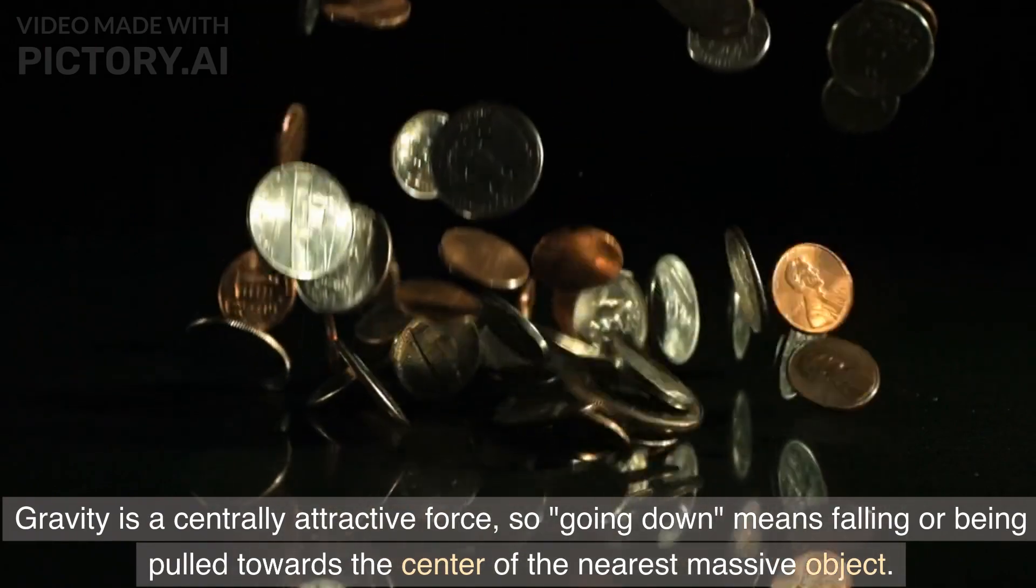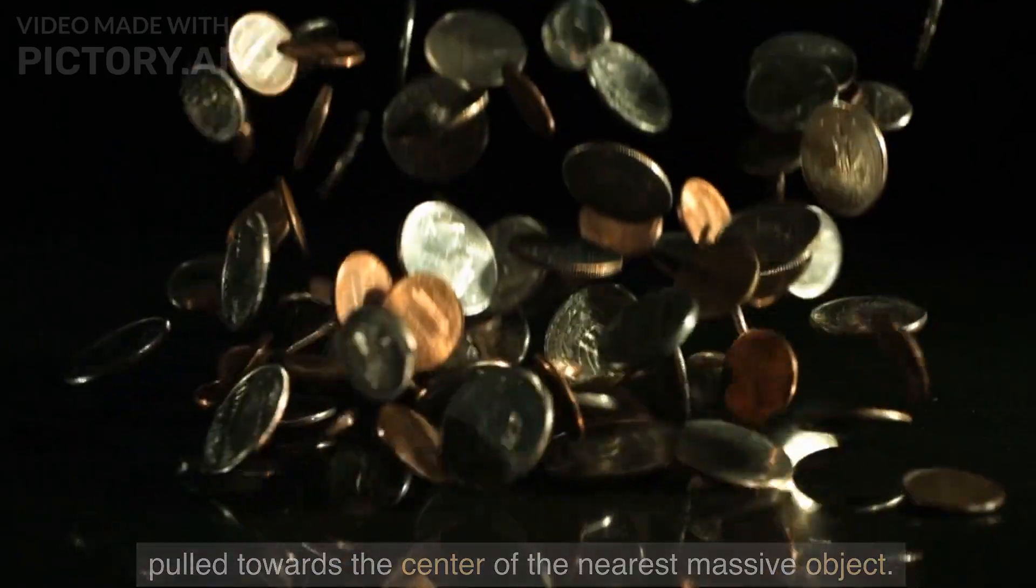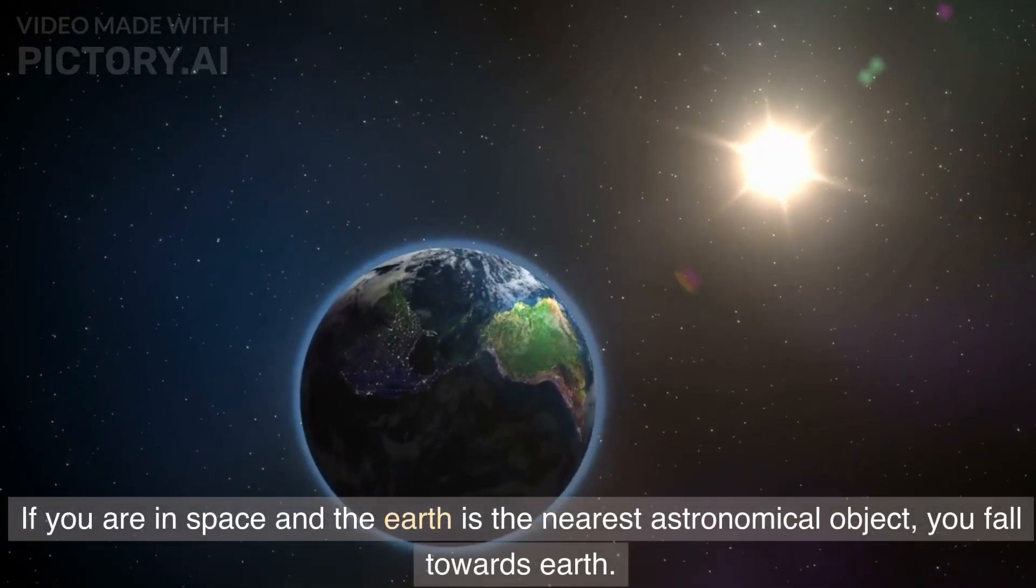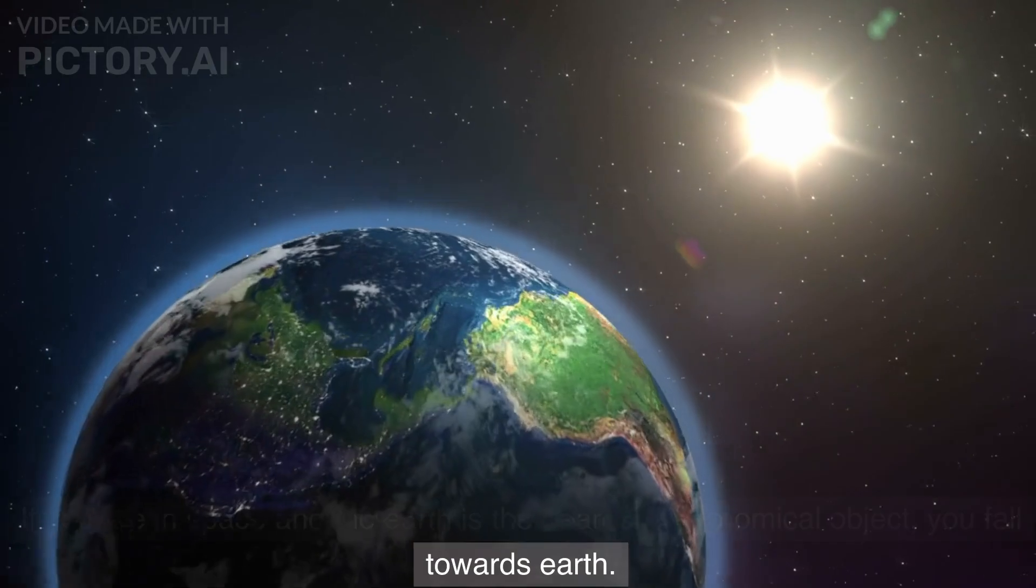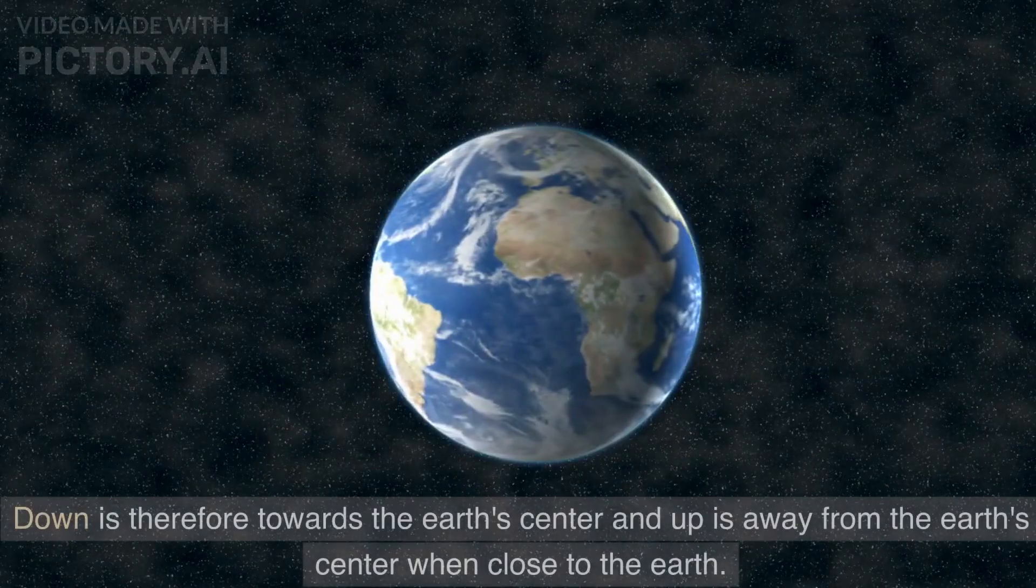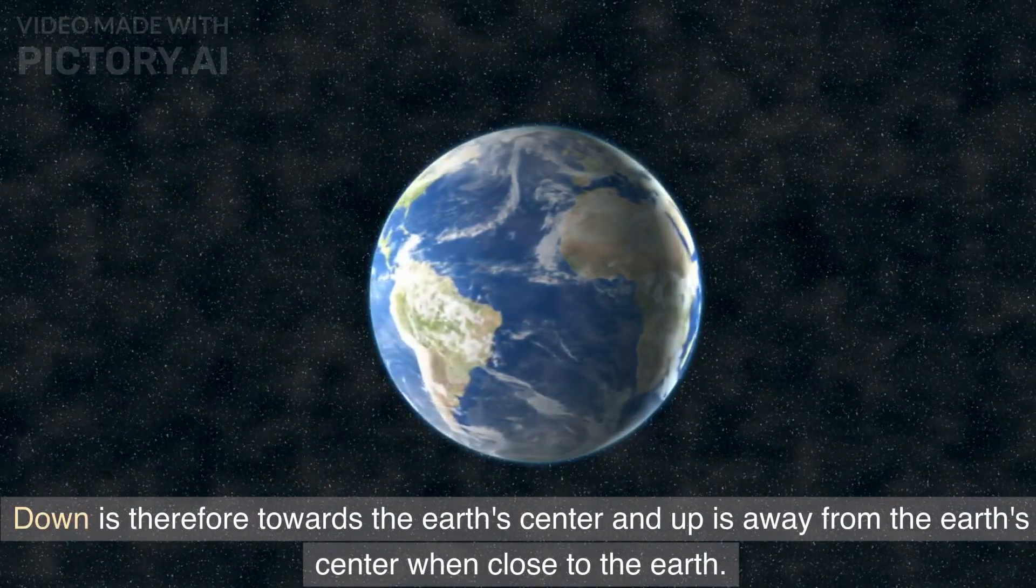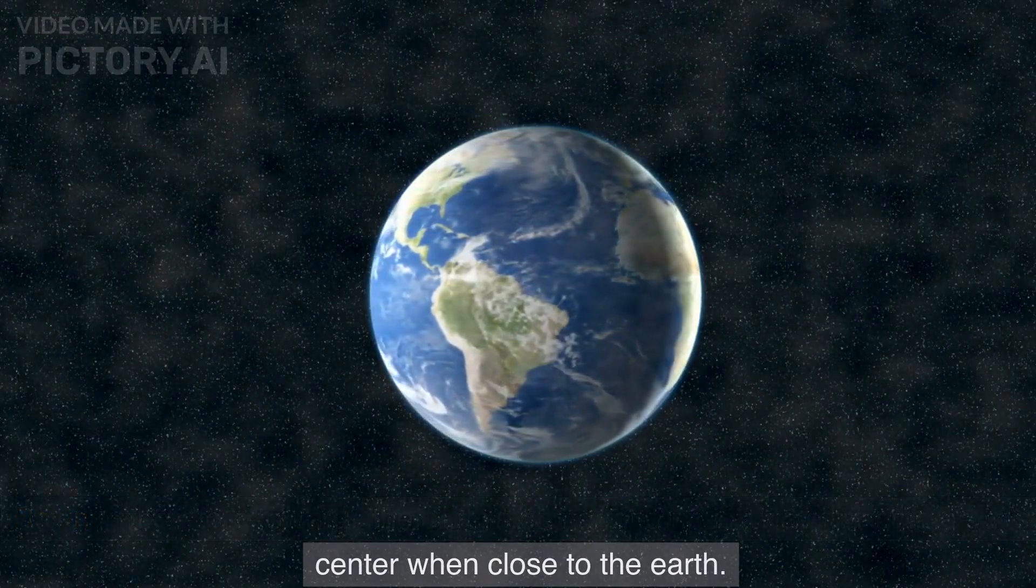means falling or being pulled towards the center of the nearest massive object. If you are in space and the Earth is the nearest astronomical object, you fall towards Earth. Down is therefore towards the Earth's center and up is away from the Earth's center when close to the Earth.